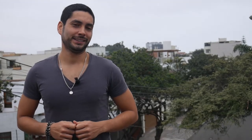Now, I will show you some exercises to practice what we learned today. Luciana, el papel — this means Luciana cuts the paper. The right answer is corta. Notice that the verb stem is colored in red and the conjugation in blue. Keep that in mind so we can remember how to determine the regular verb stem.